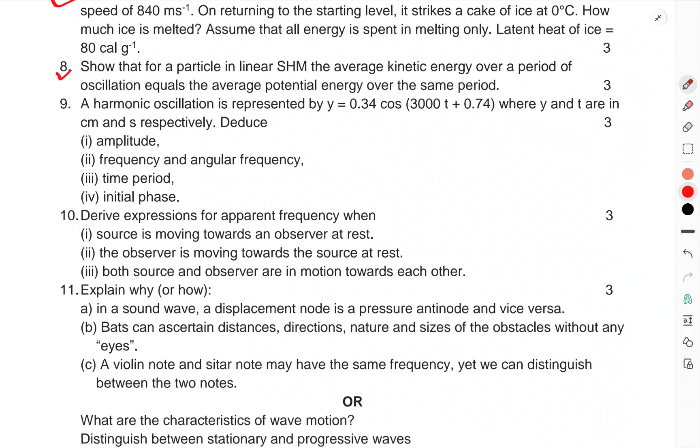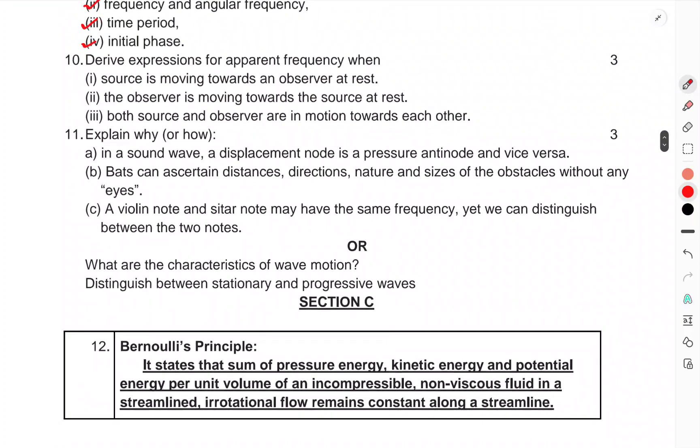Question 8, show that for a particle in linear SHM, the average kinetic energy over a period of oscillation equals the average potential energy over the same period. Question 9, a harmonic oscillation is represented by y = 0.3 cos(3000t + 0.74), where y and t are in centimeters and seconds respectively. Deduce amplitude, frequency, angular frequency, time period, and initial phase. Question 10, derive the expression for apparent frequency when the source is moving towards an observer at rest, the observer is moving towards the source at rest, both source and observer are in motion towards each other.